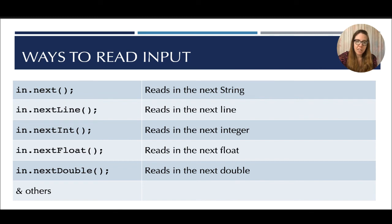So there are many ways to read input. And these are the ones that we will be making use of. So if we use the dot next method, what it does is it reads in the next string. So it would read in any combination of characters that it finds, even if they include numbers. And then as soon as it sees any white space, a return character, a space, it stops reading. And then it returns that. If we use the next line method, it will read everything until it hits a new return character, a new line character. Next int reads in the next integer. Next float reads in the next float. Next double the next double. And others.